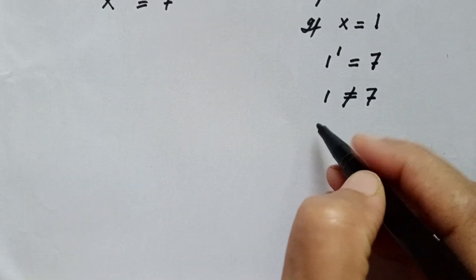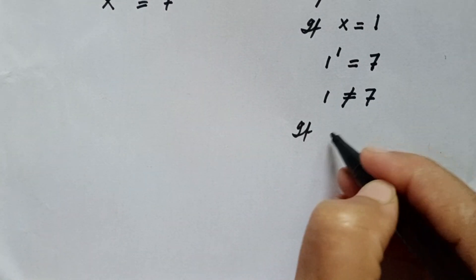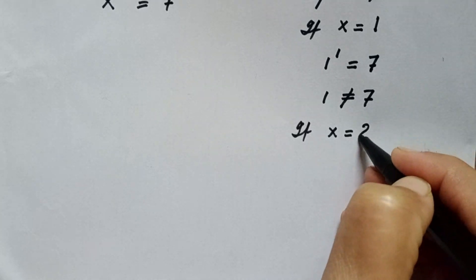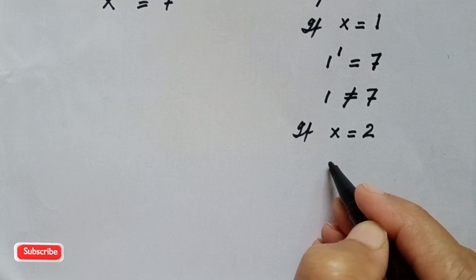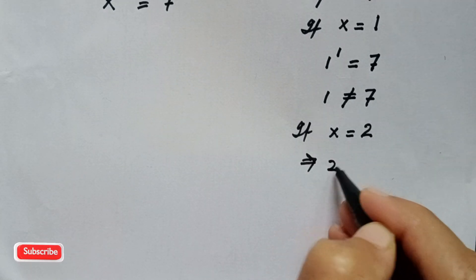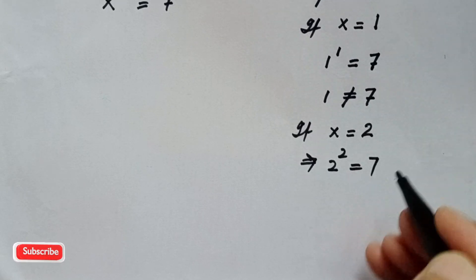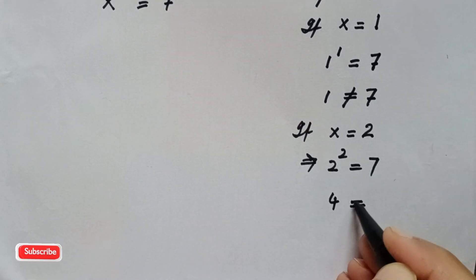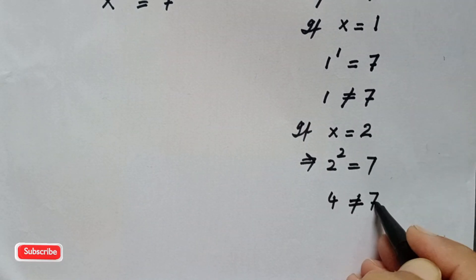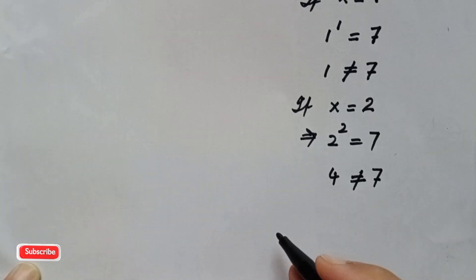Next, if x is equal to 2, then 2 to the power 2 is equal to 4, which is not equal to 7. So again we will consider another value of x.